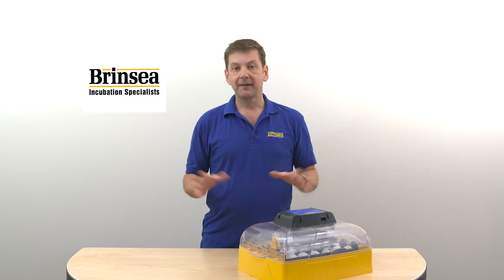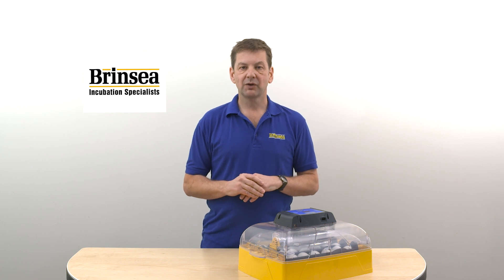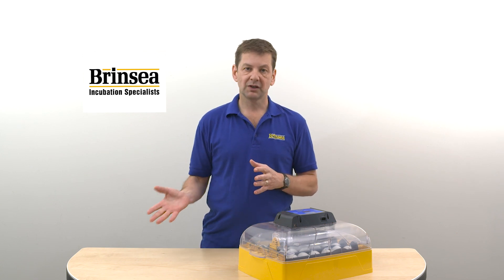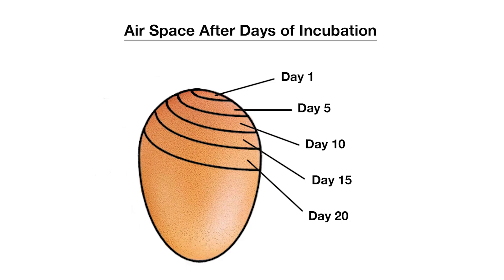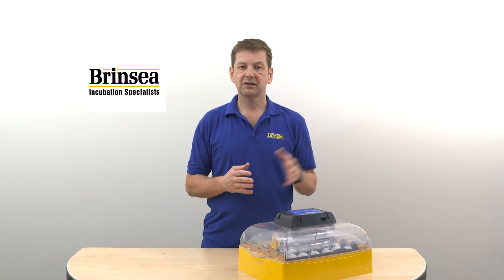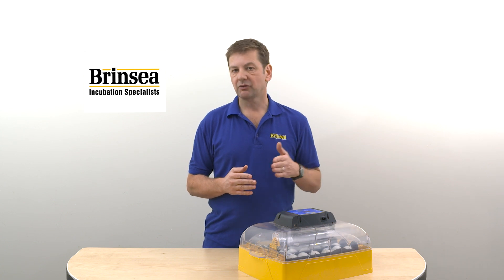Most people don't weigh eggs as it's quite a lot of hassle and involves drawing graphs — if you're interested, there's information on our website about how to achieve that. The second way of checking your humidity is correct is by candling. By candling your egg you can see the development of the airspace and check against instructions in our incubators to see whether the airspace is growing at about the right rate.